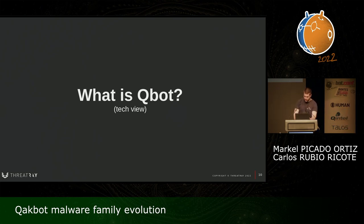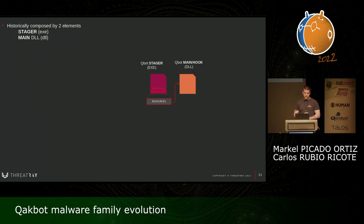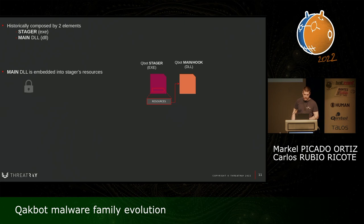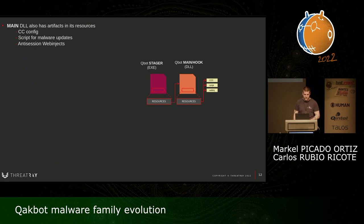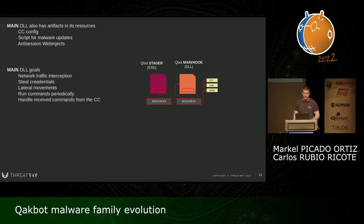From the technical point of view, Qbot is basically composed of two elements: the stager and the main DLL, which also has hooking capabilities. The main DLL is embedded into the stager resources. It's encrypted using the RC4 algorithm and compressed using the APLIB algorithm in some cases. The stager's goals are to do the installation, persistence, and to inject the main DLL into running processes. The main DLL also has encrypted and compressed resources, which are the command and control config, the script for malware updates, and anti-analysis web injects. The main goal of the main DLL is network traffic interception, credential theft, lateral movements, running commands periodically, and handling commands from the command and control.